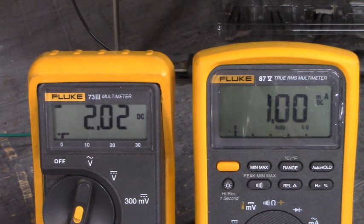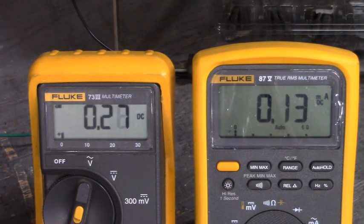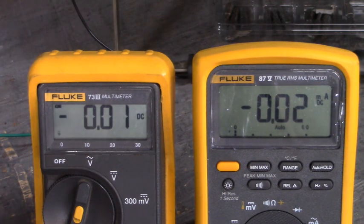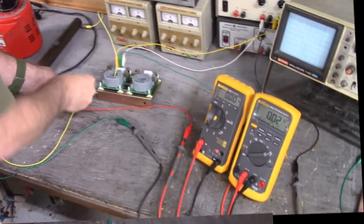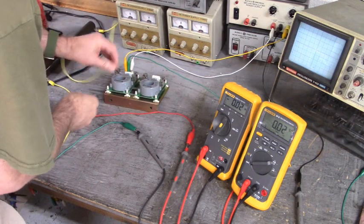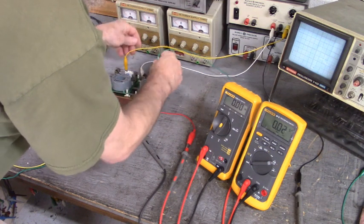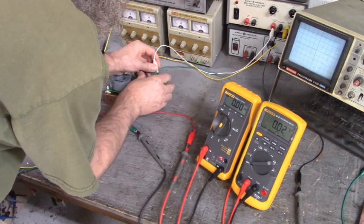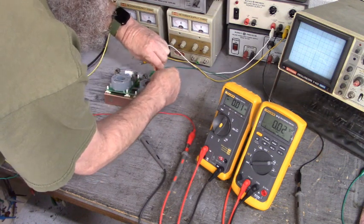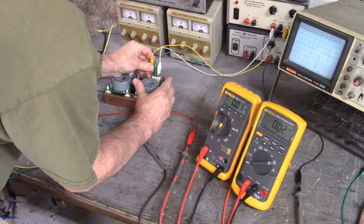Let me hook up the other current sense module and you'll see what it's doing. I'm going to back the variac down and turn it off. Turn off the plus and minus 15 volt DC supply. And we're going to move to the second current sense module.